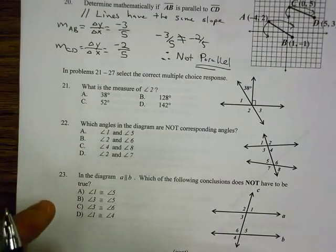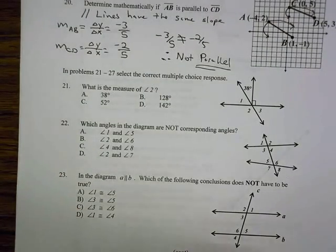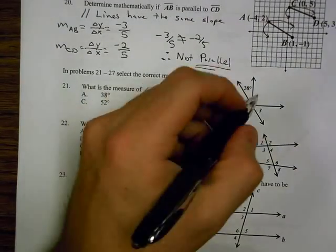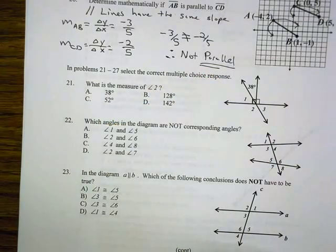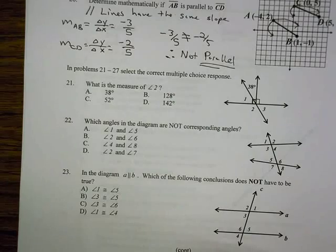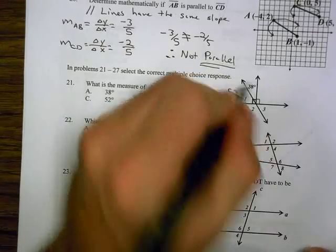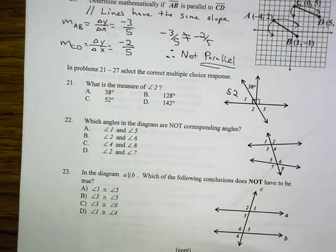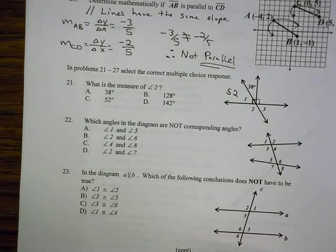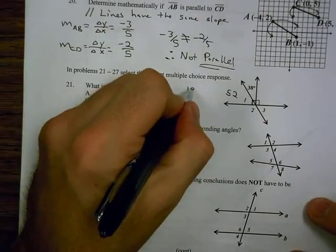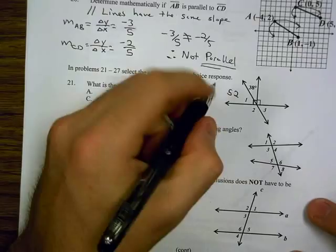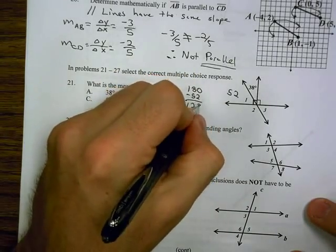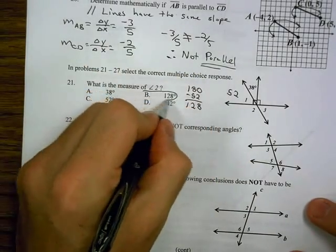Okay, on 21, we need to find the measure of angle 2. Well, I have that right angle on the right side. So, in that case, I know that this is also a right angle. Which allows me to find angle 1, which is going to be 90 minus 38, which is 52. And then, in order to find angle 2, angle 1 is a supplement to angle 2. So, I'm going to do 180 minus 52. And that gives me 128, answer B.